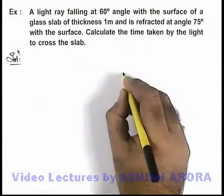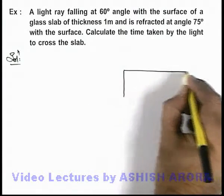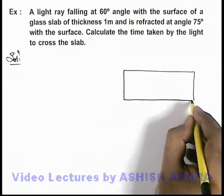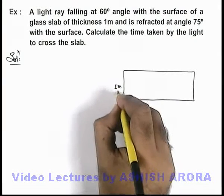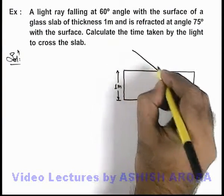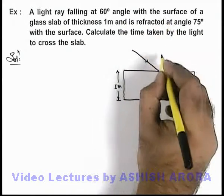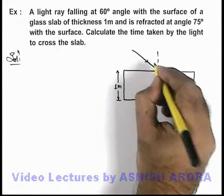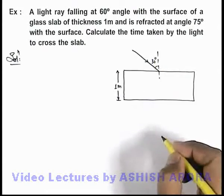Here in this situation, if we draw the glass slab, we are given that its thickness is 1 meter and a light ray is incident onto its surface at an angle 60 degree with the surface. That means its angle of incidence we can consider as 30 degree.